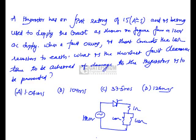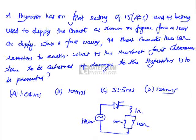A thyristor has an I square DT, integral of I square DT rating of 15 A square seconds and is being used to supply the circuit as shown in figure. Okay, this is a circuit he has given. Now, when a fault occurs, it short circuits the 10 ohm resistors to earth. Okay, these two 10 ohm resistors are short-circuited.